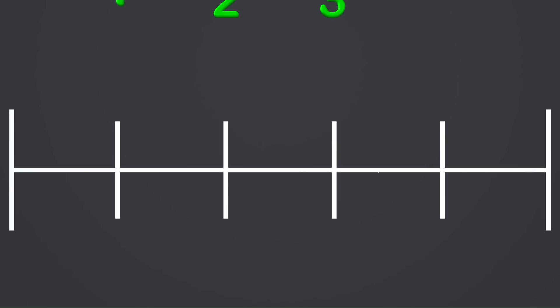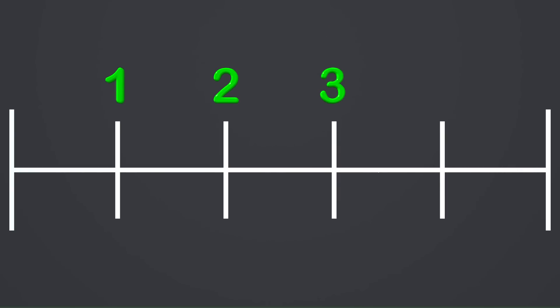Here we are at the chalkboard looking at a number line. You might wonder why we are looking at a number line when we are going to work on problems involving time. Well, a number line can be used to help us understand what is being represented in the problem. This simple number line has the numbers 1, 2, and 3. We can say that each one of these numbers represents an hour.